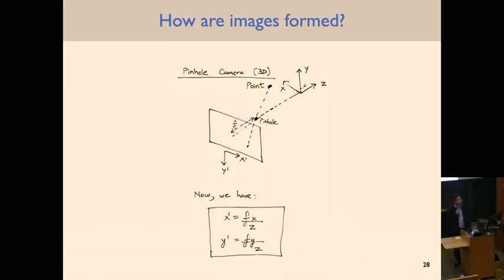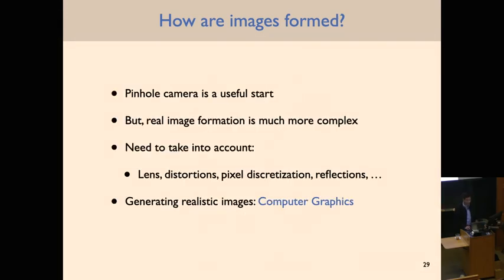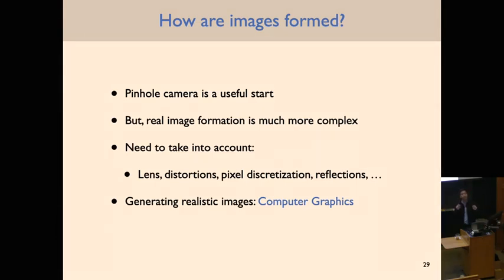Student question: if z is larger because the camera is looking farther away, the object looks smaller? Yes, exactly. And if the focal length f is larger — if your camera is extremely large — the object will look larger as well. The pinhole camera is a useful start, but real image formation is much more complicated. You need to account for the specific lens, lens distortions, pixel discretization with a finite number of pixels, reflections, and many other factors. There's a whole field of computer graphics that looks at realistic image generation, some of which is now being automated by machine learning models like Stable Diffusion.